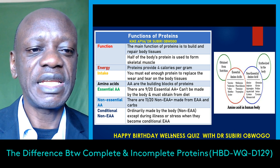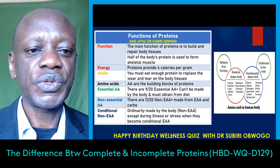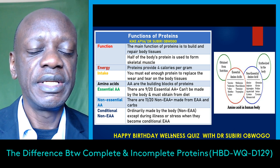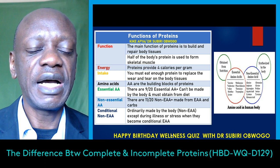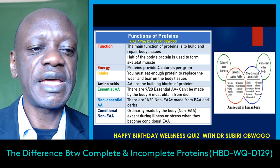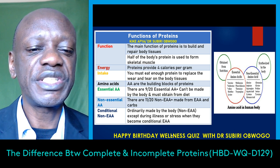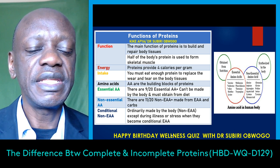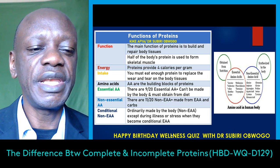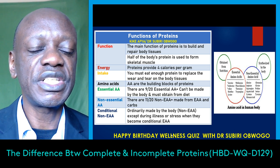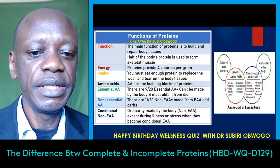Amino acids are the building blocks of proteins, so sometimes when you hear the term amino acids, you're basically referring to proteins. There are about 20 amino acids, nine of which are essential — meaning they can't be made by the body and must be obtained from the diet. The other 11 are non-essential, meaning they are made from essential amino acids and carbohydrates. If you don't consume enough of the essential amino acids, you don't make the non-essential ones and you become deficient in protein.